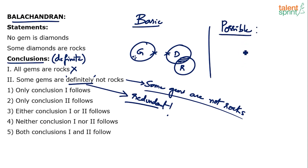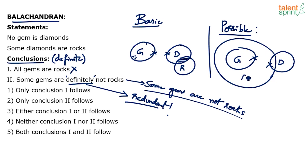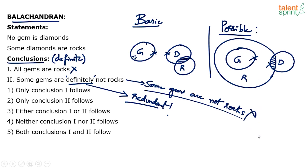I can think of a possible diagram where even conclusion 2 will fail. No gem is a diamond — gem and diamond do not touch. Some diamonds are rocks — can I draw rocks in this fashion? In this possible diagram, all the gems have come inside rocks. Have we violated any of the statements? No — no gem is a diamond, yes these two do not touch. Some diamonds are rocks, yes. But some gems are not rocks goes wrong here — all the gems have become rocks. When all gems are inside rocks, can you say some gems are not rocks? No. So conclusion 1 does not follow and conclusion 2 also does not follow. Conclusion 1 failed in the basic diagram. Conclusion 2 cleared the basic diagram but failed in the possible diagram.